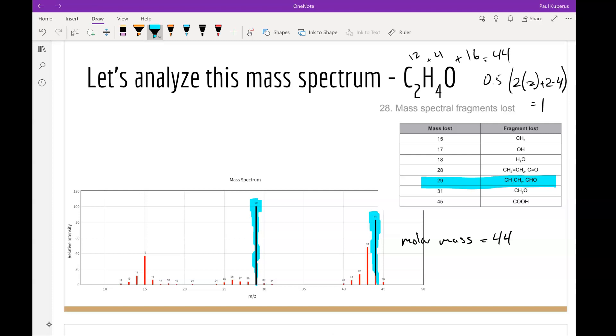Now, because I only have two carbons and four hydrogens, that CH3CH2 is impossible. So I must have a CHO molecule or functional group present. Now we're going to move on to our last functional group here. And we're looking again at the highest peak and it's 15. So that tells me I have a CH3 fragment that was lost. So I also have a CH3 that's present.